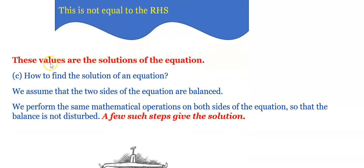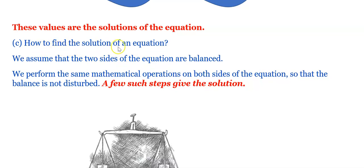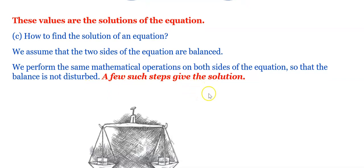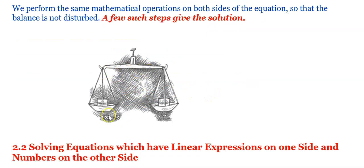To find the solution of an equation, we assume that the two sides are always balanced. We perform the same mathematical operations on both sides — if we add, subtract, multiply, or divide, we do the same on both sides so that the balance is not disturbed. This is like a balance scale: to keep it equal, we add or subtract the same weight on both sides.